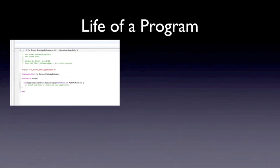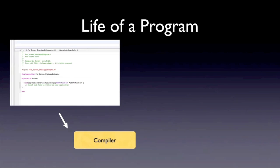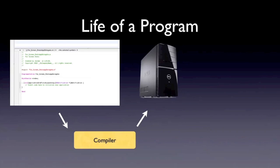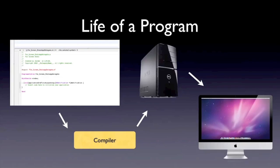Now the life of a program: it starts out with just code that you type — the code and the interface that you make. Then it goes to the compiler. The compiler is built into Xcode so you don't have to worry about that; you just hit compile. And then it's on your hard drive or on your iPhone. Then when you open it up, it's there and running on screen. That's just the simplified life of a program.